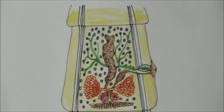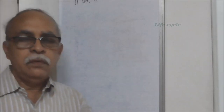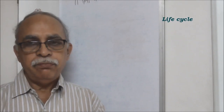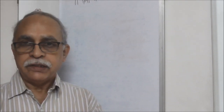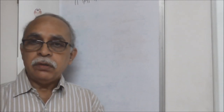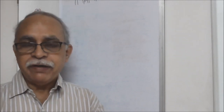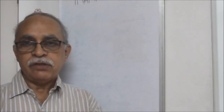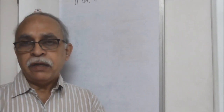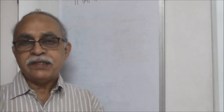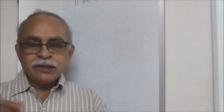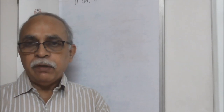The mature proglottid contains both male and female reproductive organs. It normally prefers cross fertilization, but if that's not possible it goes for self fertilization — within the same animal sperms and ova are released, get fertilized in the uterus, and fertilized eggs are formed.